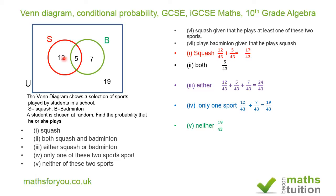For question five — neither sport — we're still thinking about 43 students in the sample space. The 19 students outside both circles don't play squash or badminton, so the probability is 19/43.